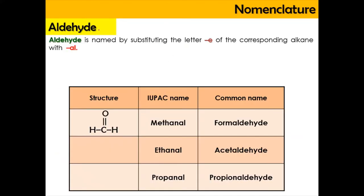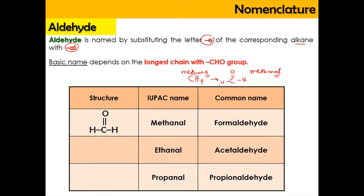Now let's do the nomenclature of aldehyde. Basically, aldehyde is named by substituting the letter E of an alkane with AL. For example, methanal comes from the word methane — methane has CH4 — and when we change it into aldehyde, the E is changed into AL, giving us methanal. The basic name of the aldehyde depends on the longest chain containing the CHO group, which is the carbonyl group, and the numbering should start from that carbon.